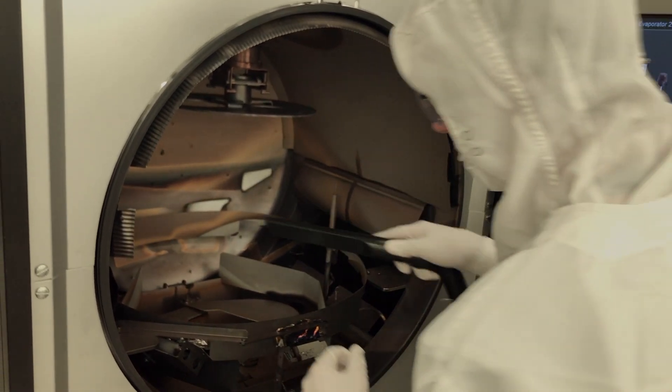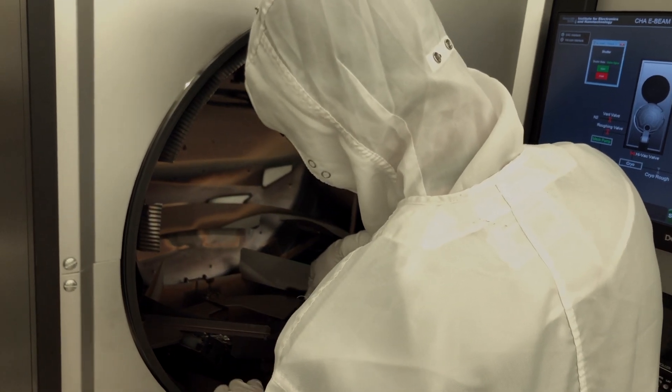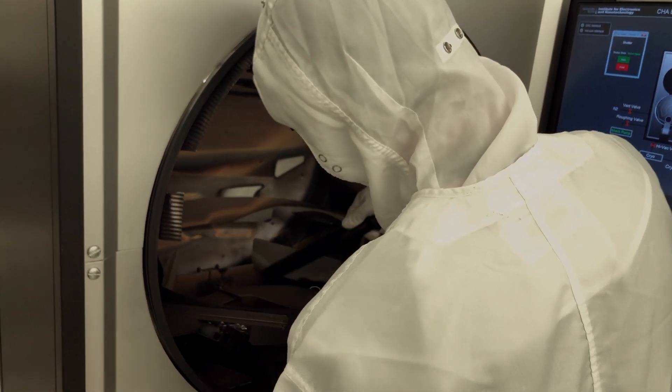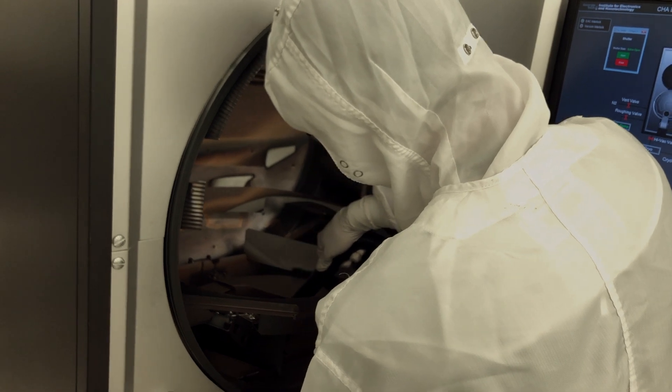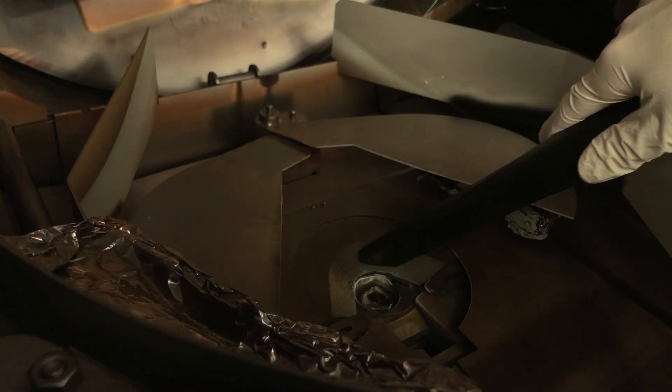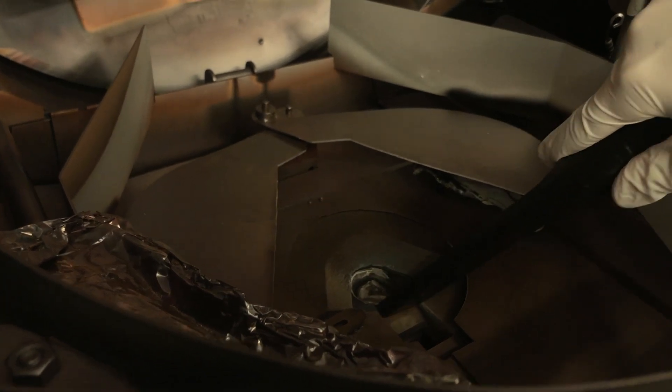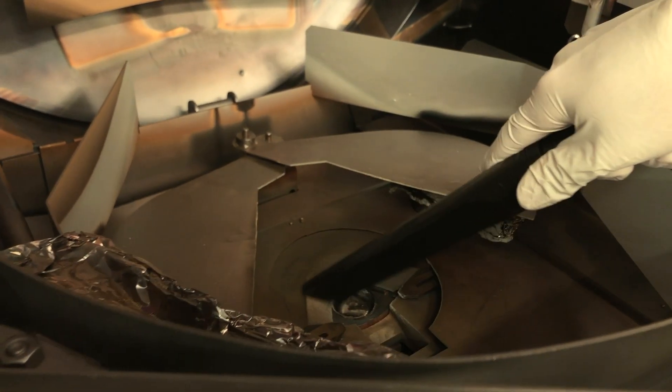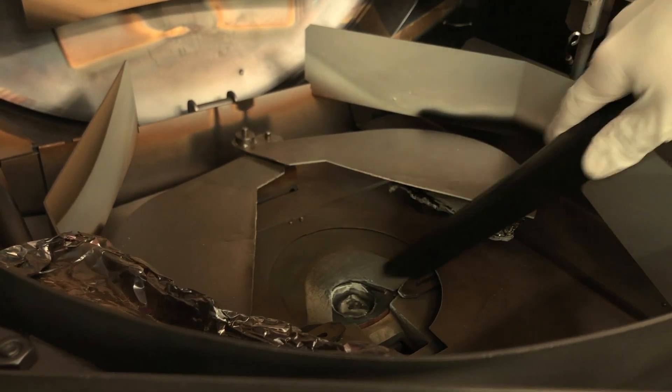You should now take the time to vacuum in and around the chamber. It is important to clean up any debris prior to a process run. A clean chamber will ultimately result in a smoother process run and better results. Vacuuming around the threshold of the chamber will also help the chamber door to form a better seal when the system is pumping down.